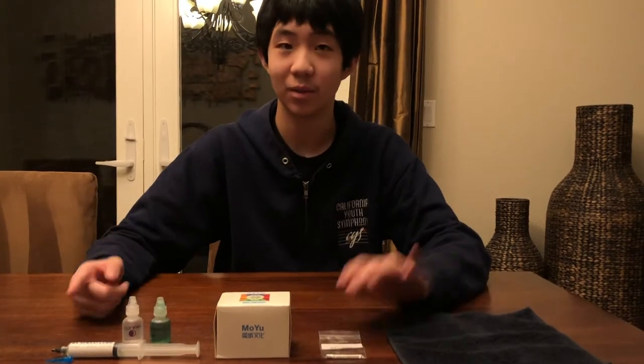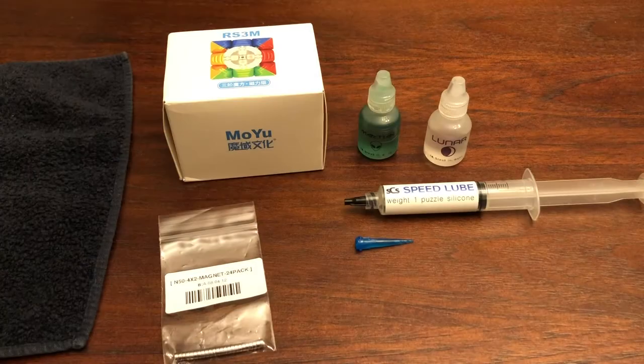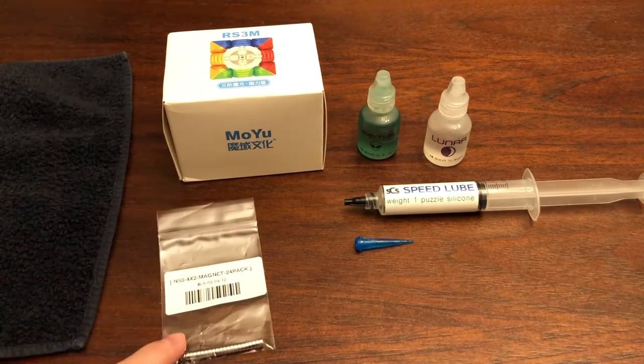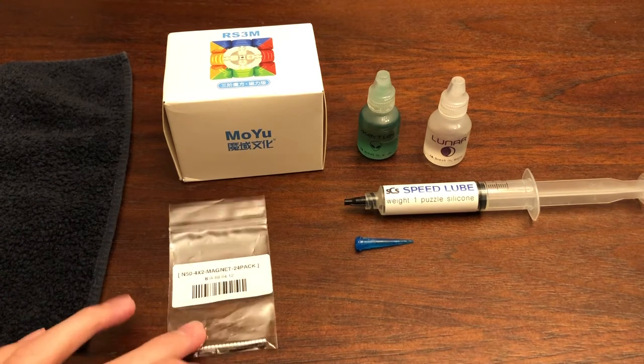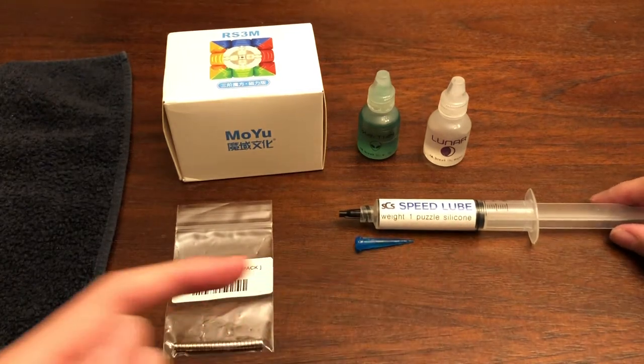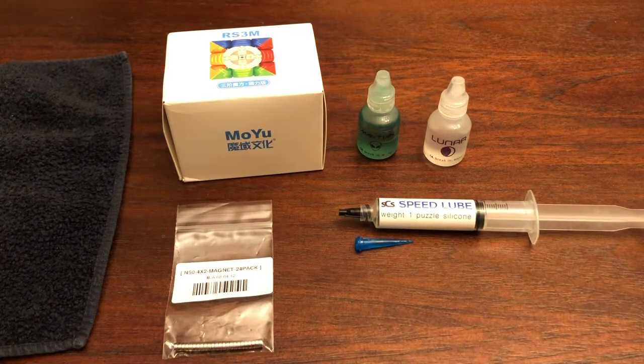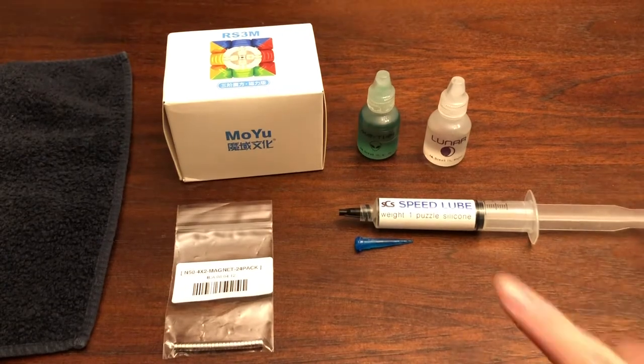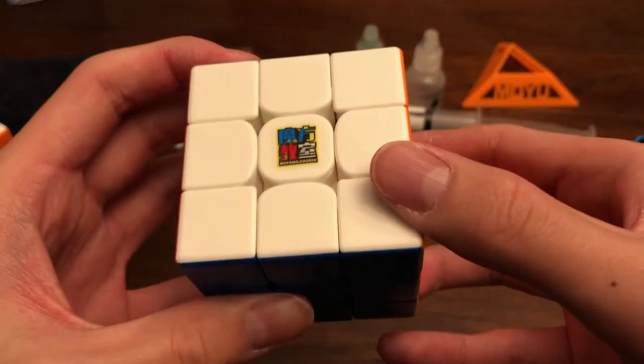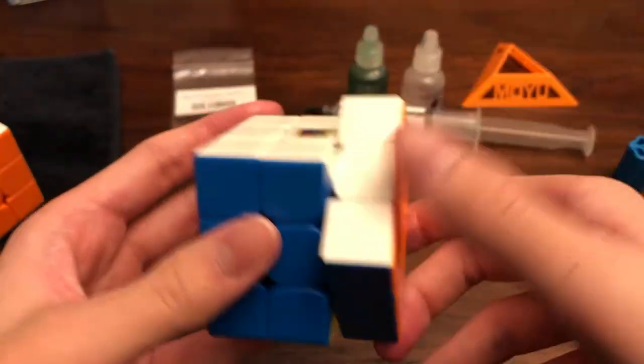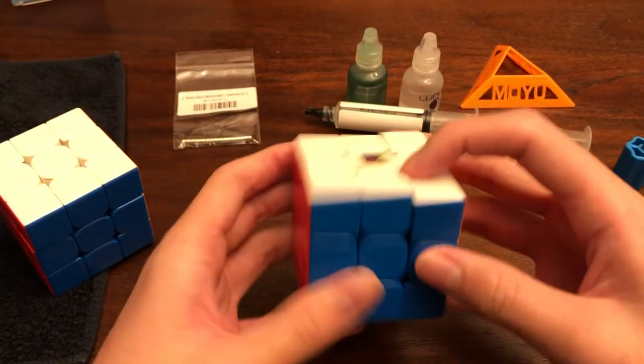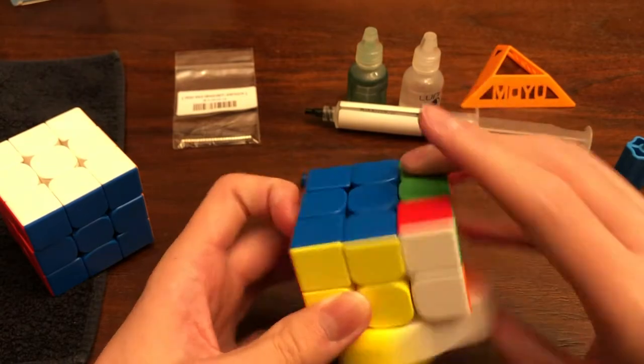Alrighty guys, so these are the materials that I will be using to set up my RS3M. We have the extra magnet pack that you can get for like a dollar extra at speedcubeshop.com. We have our silicon lube, so it's a silicon lubricant. It doesn't have to be weight 1, it can be weight 2, weight 3, it can be any weight honestly. But you just have to make sure it's a silicon lubricant. And then I have lunar, Martian, and then of course the RS3M.